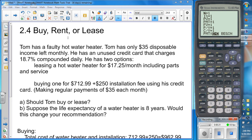Let's take a look at a water heater question. Tom has a faulty water heater. He has only $35 in disposable income left monthly, so that's the maximum amount that he can pay per month. He has an unused credit card that charges 18.7% compounded daily. He has two options.